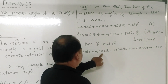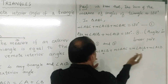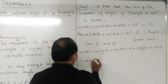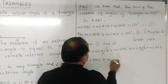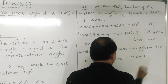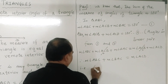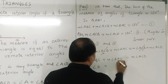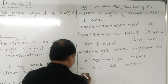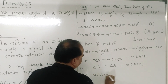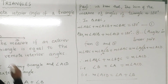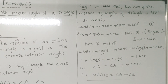Here, angle ACB is common on both sides of the equation, so we can cancel the common term. Therefore, measure of angle ABC plus measure of angle BAC is equal to measure of angle ACD. That is, angle B plus angle A equals angle ACD — so the exterior angle is equal to the sum of the remote interior angles.